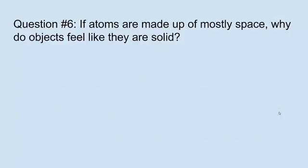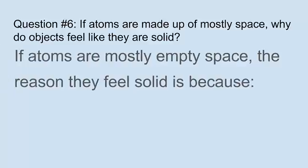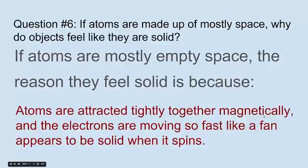Question six: If atoms are made up of mostly space, why do objects feel like they are solid? If atoms are mostly empty space, the reason they feel solid is because atoms are attracted tightly together magnetically. They're held together magnetically by their magnetic fields, and the electrons are moving so fast they're like a fan. They appear to be solid even if they're just spinning electrons.